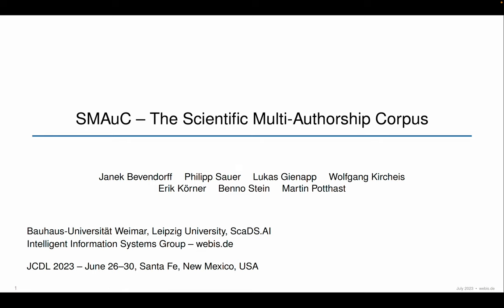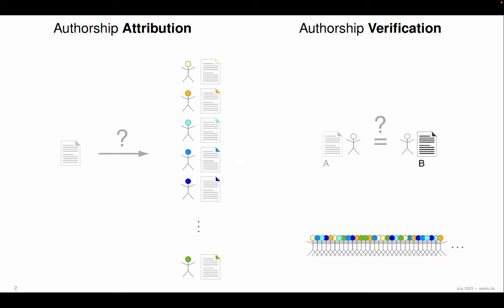Let me give you a very brief introduction into the topic. Authorship analytics deals with the analysis of writing certain texts, and this can be phrased in two different ways. On the left-hand side, you see the authorship attribution scenario, where given a text in question and a set of candidate authors who have also written their texts, you want to match these texts and see who wrote the text in question. Whereas on the right-hand side, you see the task of authorship verification, where we're not so much concerned with the authors themselves — we're only given two texts and we want to find out whether these two texts were written by the same author.